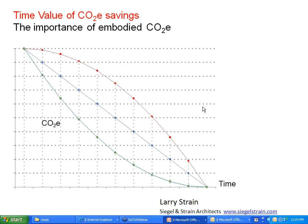Thank you. This is Larry Strain. I'm going to focus on embodied carbon and the carbon impacts of new buildings, and then Ralph will be talking about what they've learned about the value of existing buildings and saving those. Embodied carbon is the CO2 emissions or CO2 equivalents attributable to the materials and construction of our buildings, and then the relationship of that embodied carbon to operating carbon. The premise of this talk is that embodied carbon is more important than we thought.